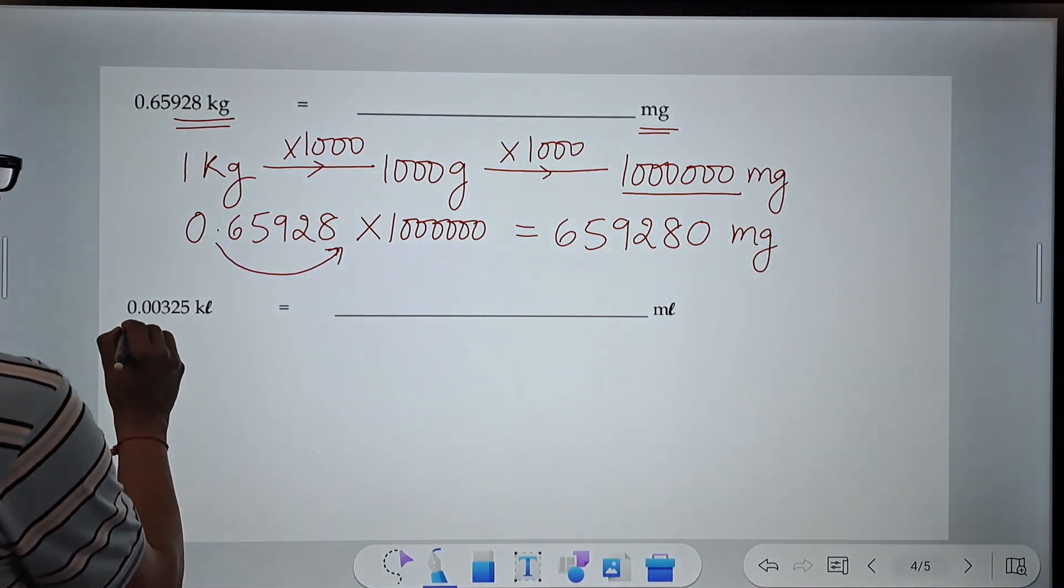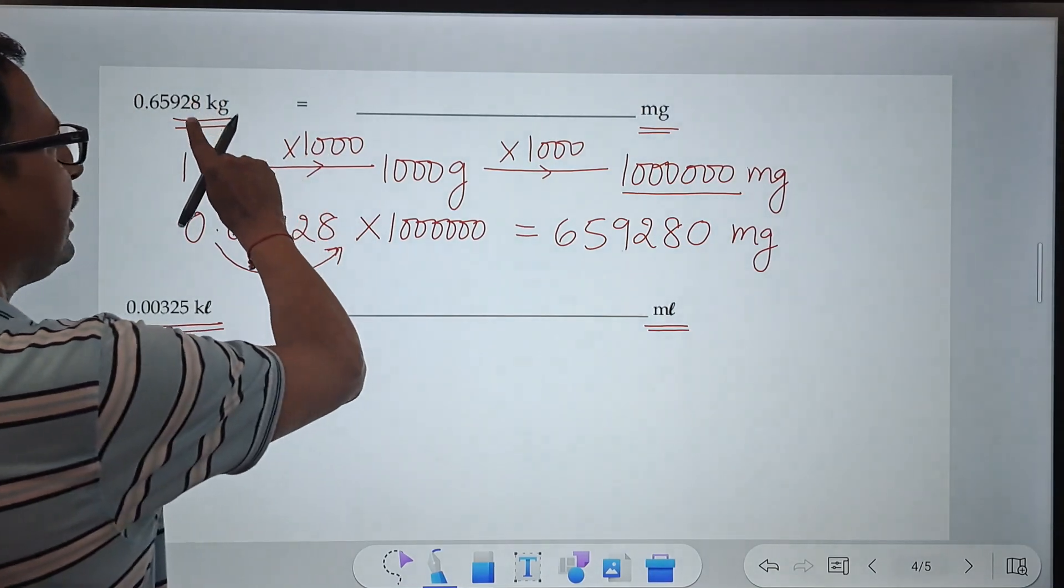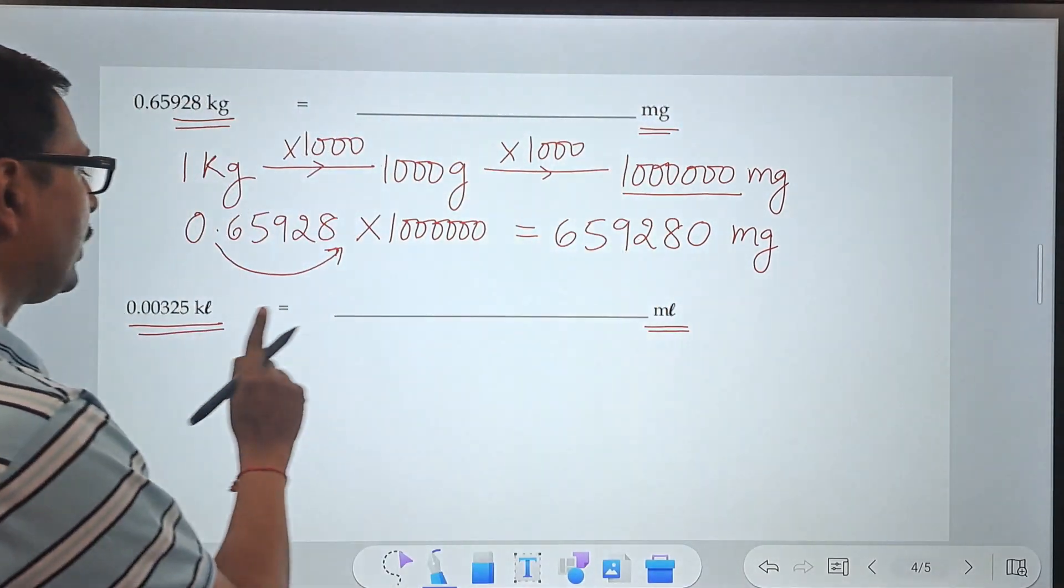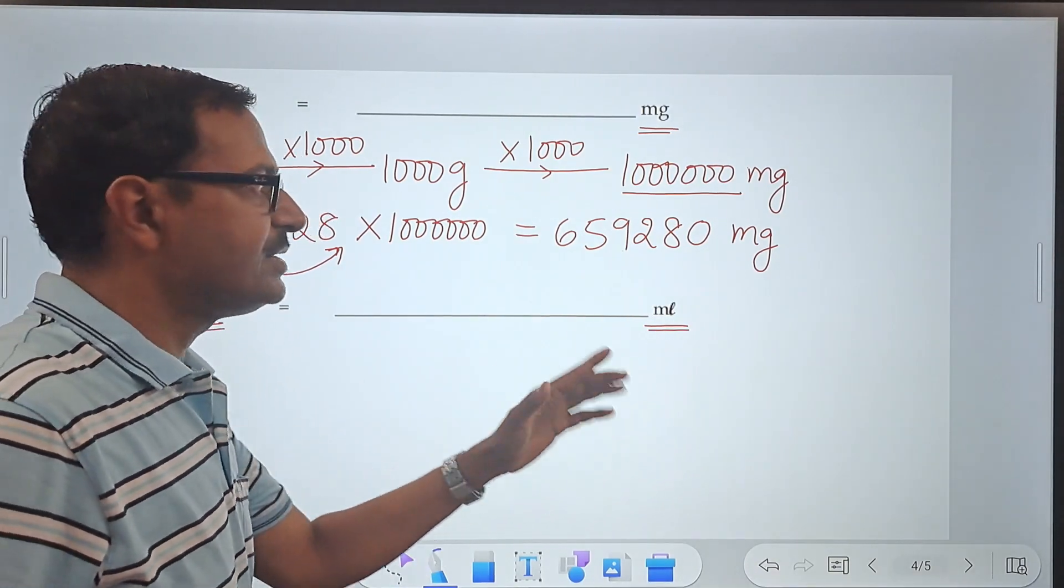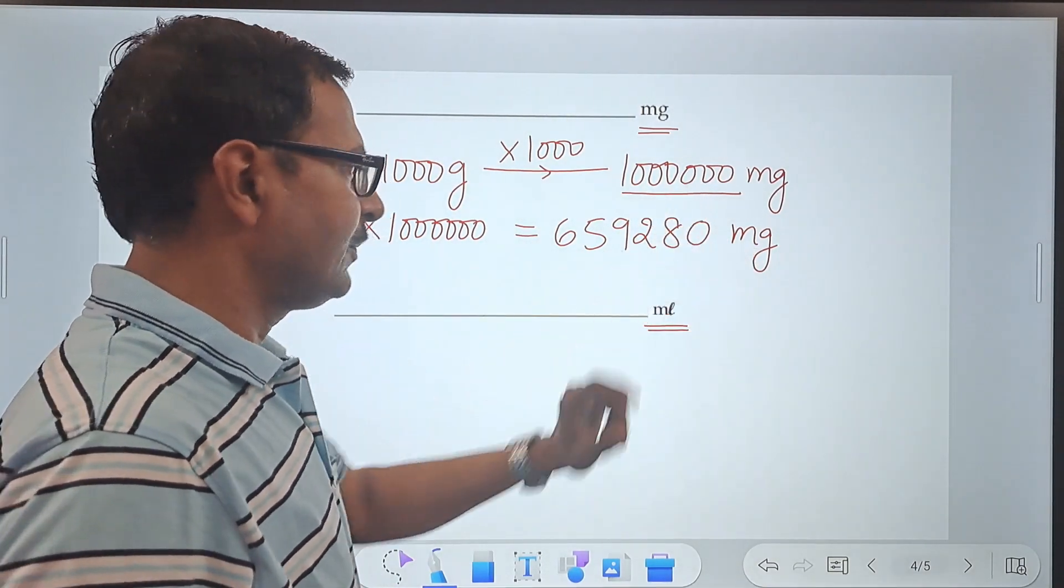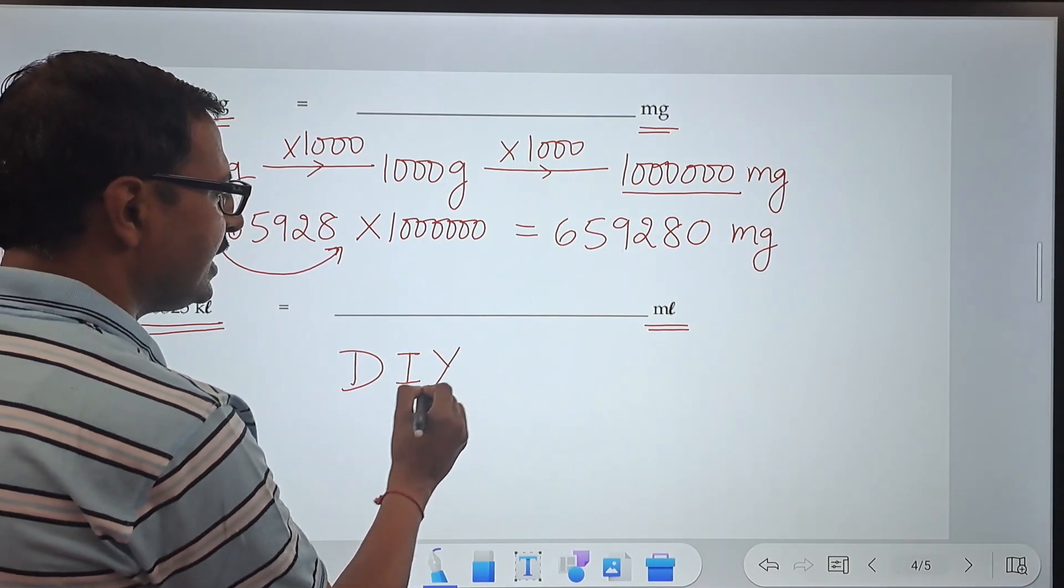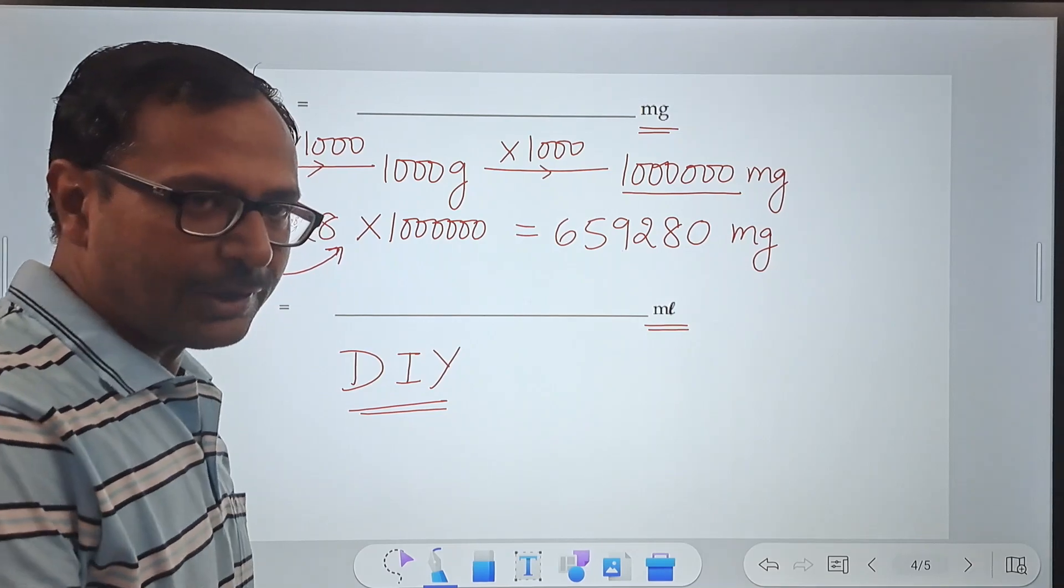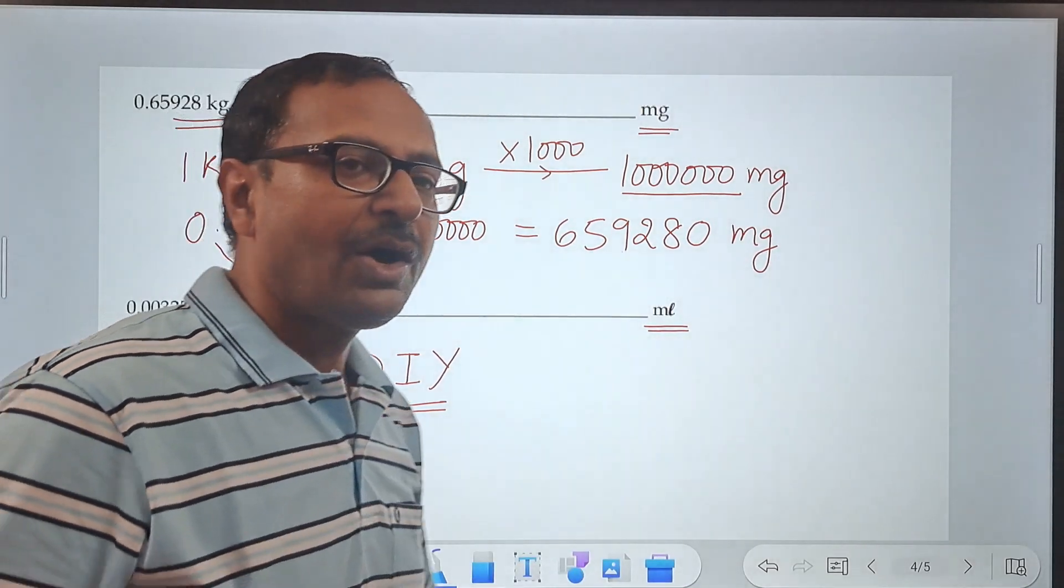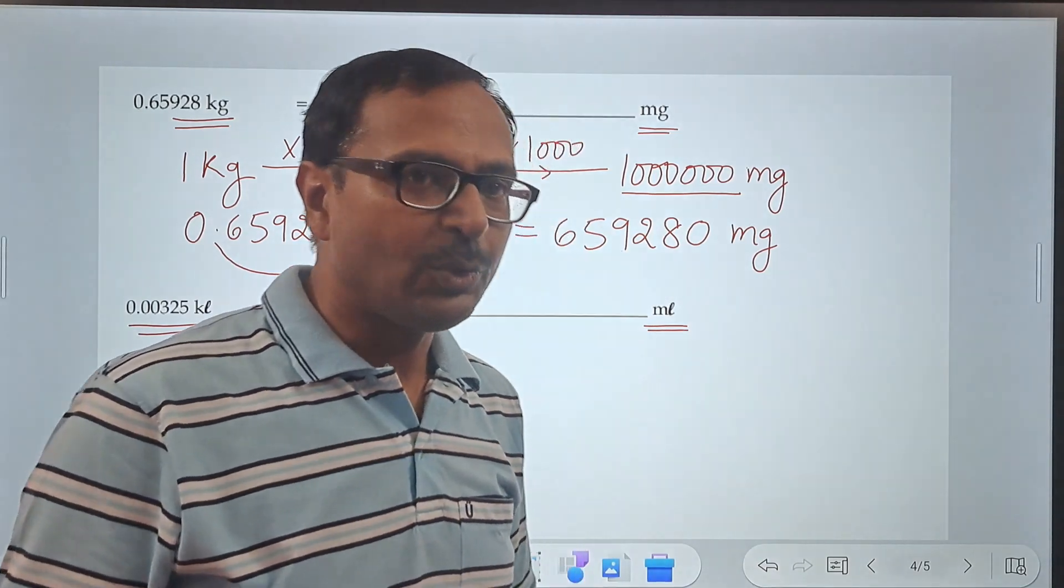Similarly, you have a kiloliter here and a milliliter here. Just like kilogram to milligram, you can convert kiloliter to milliliter, which is a very small unit, just by multiplying by this factor. So I'll leave this question as a do-it-yourself question, DIY. Do it yourself and check whether you are able to solve this or not. And I'm sure these conversions of length and mass are no longer going to trouble you anymore.